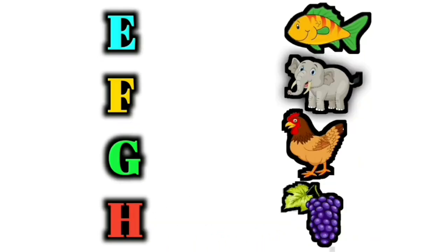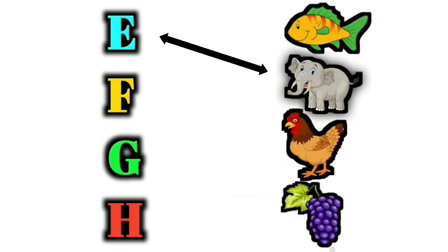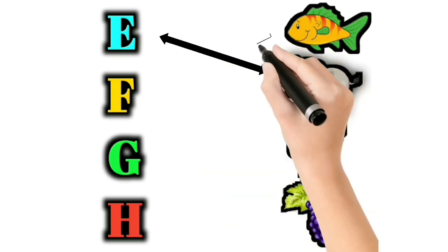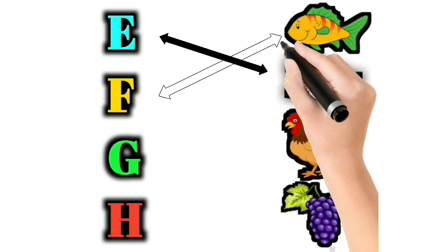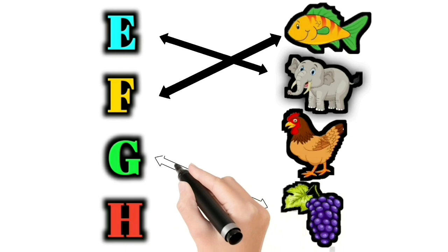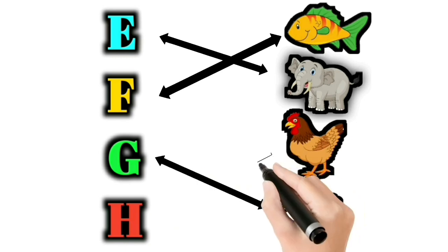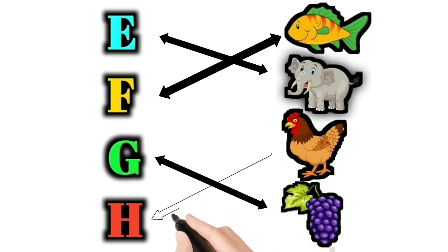E for Elephant. Y for Fish. G for Graves. H for Hen.